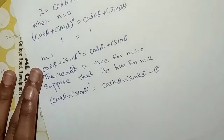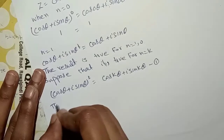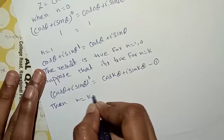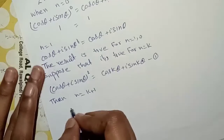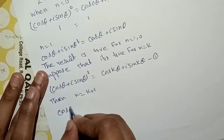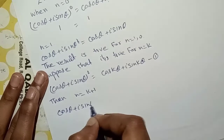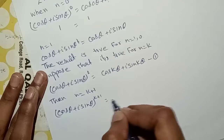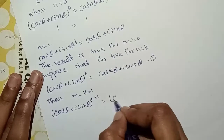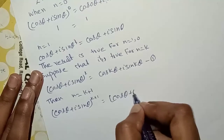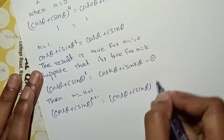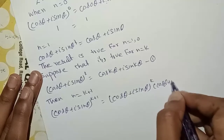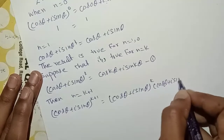Now we will prove the result for n equal k plus 1. We need to show that cos theta plus iota sin theta to the power k plus 1 holds. We write this as cos theta plus iota sin theta to the power k, multiplied by cos theta plus iota sin theta to the power 1.